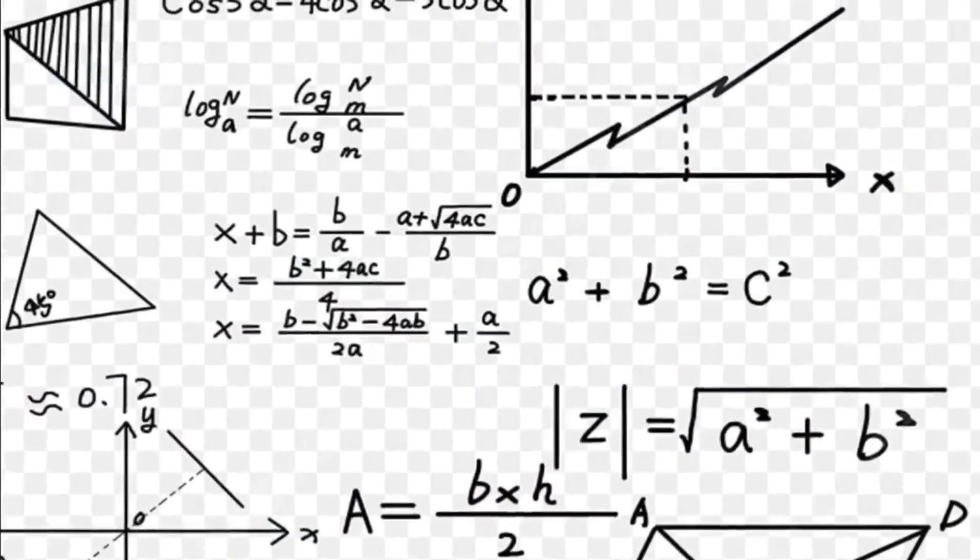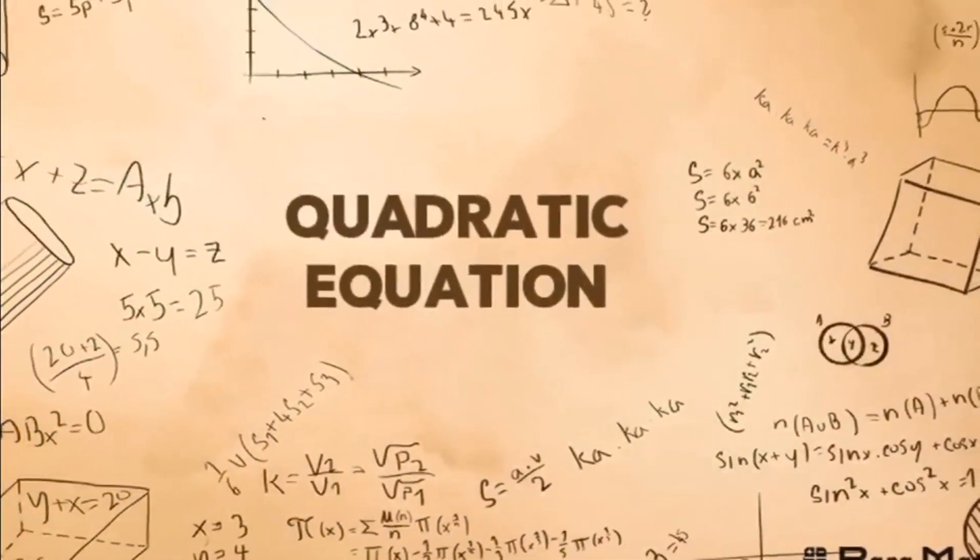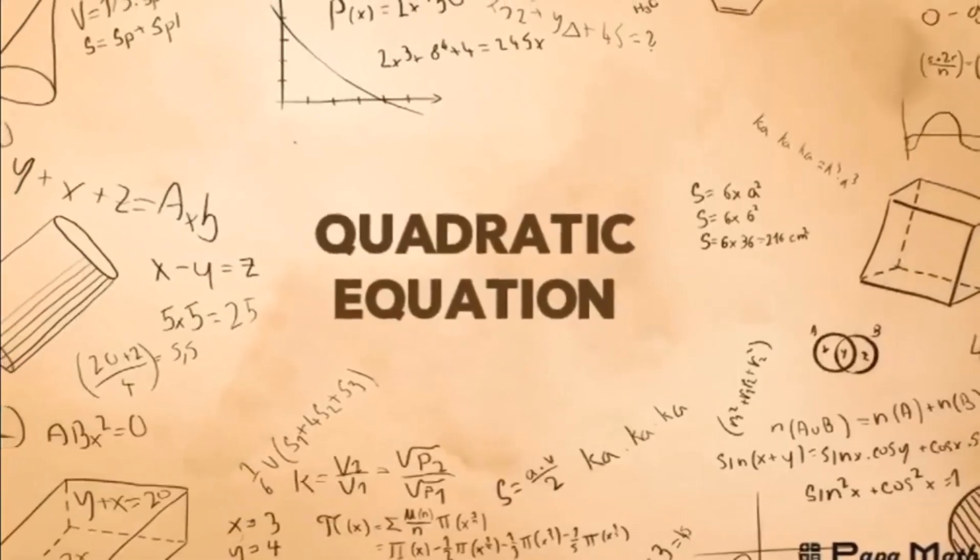In Greece 300 BCE, Euclid's Elements used geometric algebra to solve equations, treating numbers as lengths or areas.